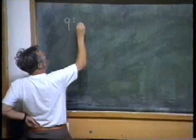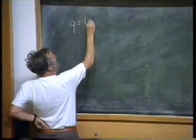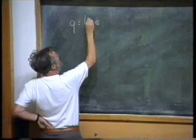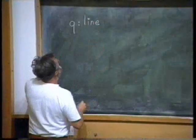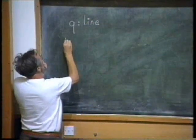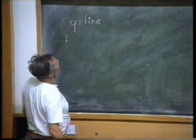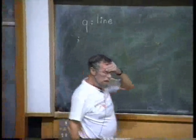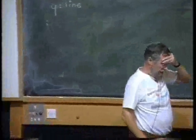We have one variable, q, of type line. And what can we do with it? We have to initialize that variable.